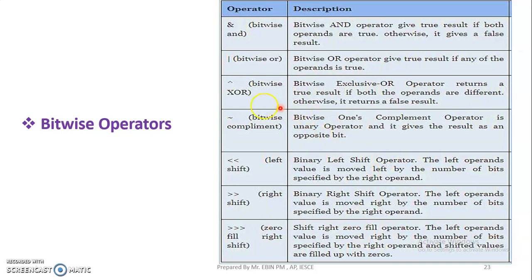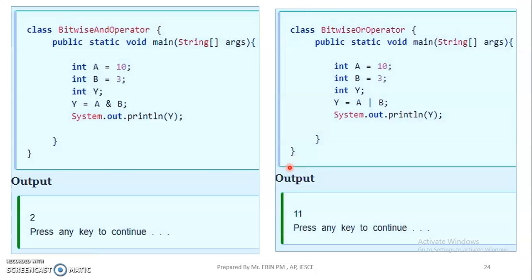So, bitwise AND, bitwise OR, bitwise XOR. Bitwise AND has a difference from logical AND. Bitwise OR has a difference from logical operators. For bitwise AND, we have a single ampersand. For bitwise OR, we have a single vertical bar. Here is an example — the bitwise operator.